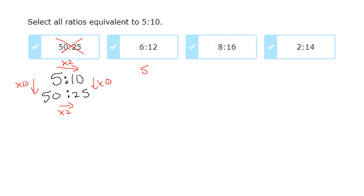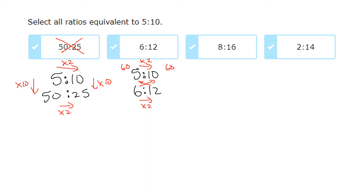For 5 to 10 and 6 to 12 — going left to right, 5 times 2 is 10 and 6 times 2 also gives me 12, so that's evidence they're equivalent. Cross multiplying to confirm: 6 times 10 is 60 and 12 times 5 is also 60 — again confirming that 6 to 12 is equivalent to 5 to 10.